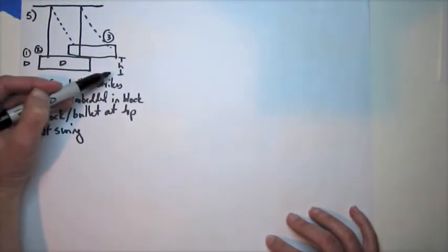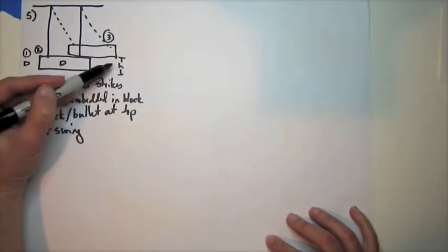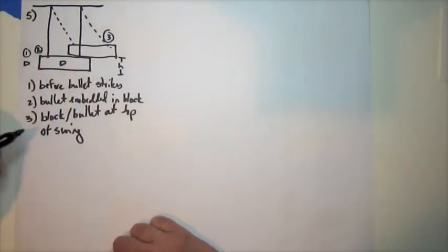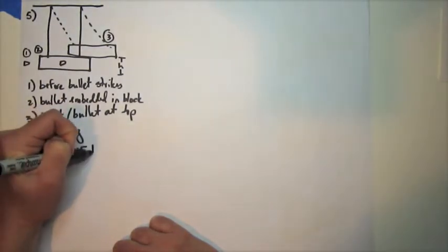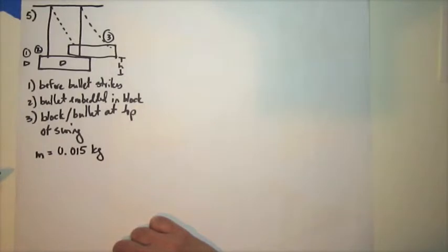Now the things that we're given for this problem are the mass of the bullet. I'm just going to write it all as a list. We know the mass of the bullet is 15 grams. I'll call that little m. We know the mass of the pendulum is 3.2 kilograms.